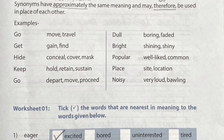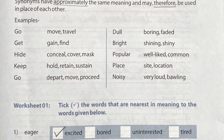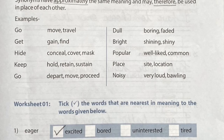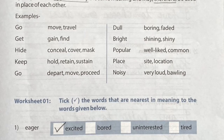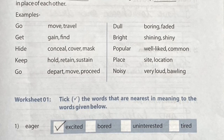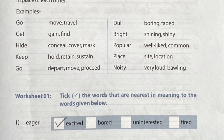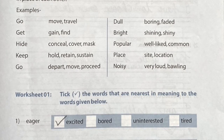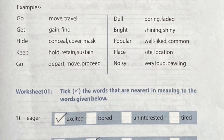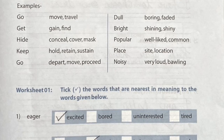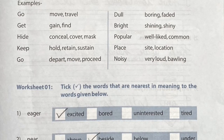More examples: 'hide' — conceal, cover, mask, keep, hold, retain, sustain. 'Go' — depart, move, proceed. 'Dull' — boring, faded. 'Bright' — shining, shiny. 'Popular' — well-liked, common. 'Place' — site, location. 'Noisy' — very loud, bawling. Instead of using words like go, get, hide, dull, bright, popular, place, or noisy, we can use any of these synonyms that are given to us.